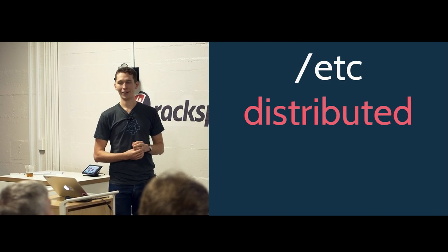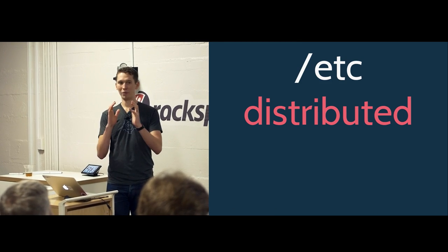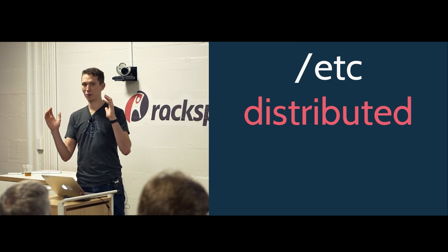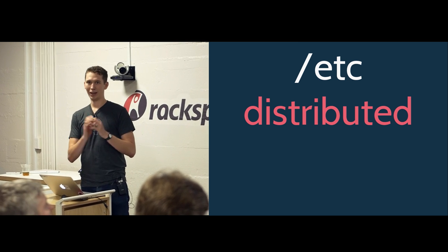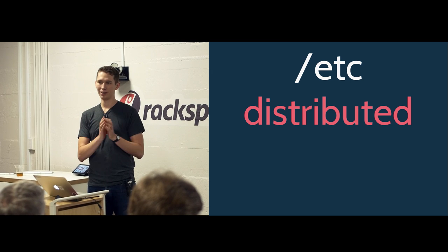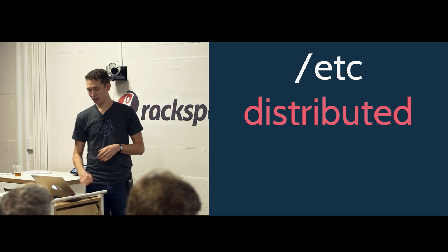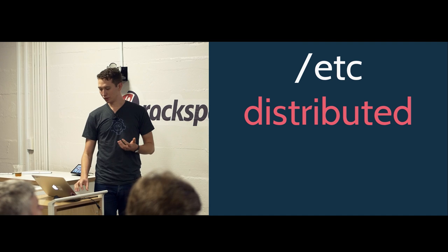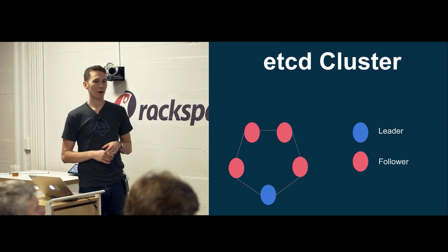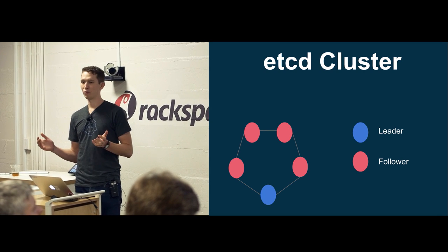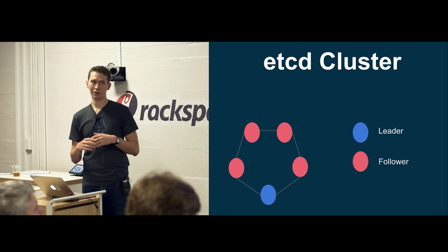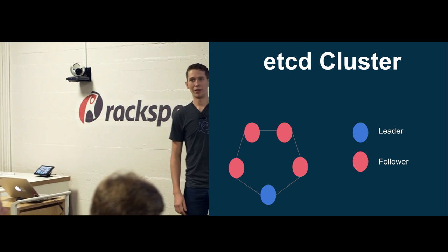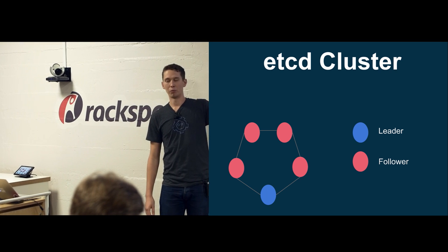etcd is an adorable mashup of /etc, which is a configuration directory on a single Unix host, and 'distributed.' The idea is that we want to have configuration data that's distributed over lots of hosts. In general, etcd clusters look something like this — you have five to seven members of an etcd cluster, one of which is automatically elected as a leader, and then you have a number of followers.